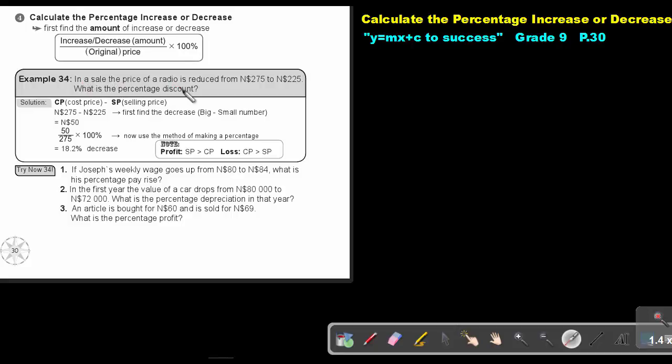In a sale, the price of a radio is reduced from 148.75 to 142.25. What is the percentage discount? So first find the difference. If I subtract this one from this one, the difference will be 50. So that amount I put over the original one, the one they mentioned first, and that's the 275. And then to make it a percentage, I multiply by 100% and I'm getting 18.2%.